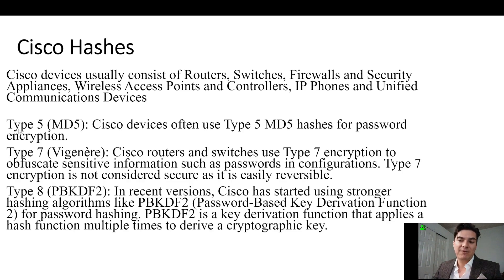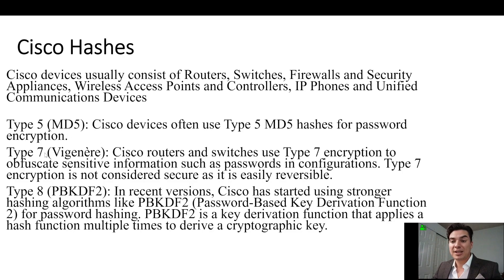Originally they used Type 5, which is a weaker hashing algorithm. Then they used Type 7, which used a cipher. And now they're using PBKDF2, which is a much stronger hashing algorithm.